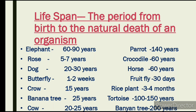Elephant lifespan is 62–90 years. Rose is 5–7 years. Dog is 22–30 years. Butterfly is 1–2 weeks. Crow is 15 years. Banana is 25 years. Cow is 22–25 years. Parrot is 140 years. Crocodile is 60 years. Horse is 60 years. Fruit fly is 30 days. Rice plant is 3–4 months. Tortoise is 100–150 years. Banyan tree is 200 years.